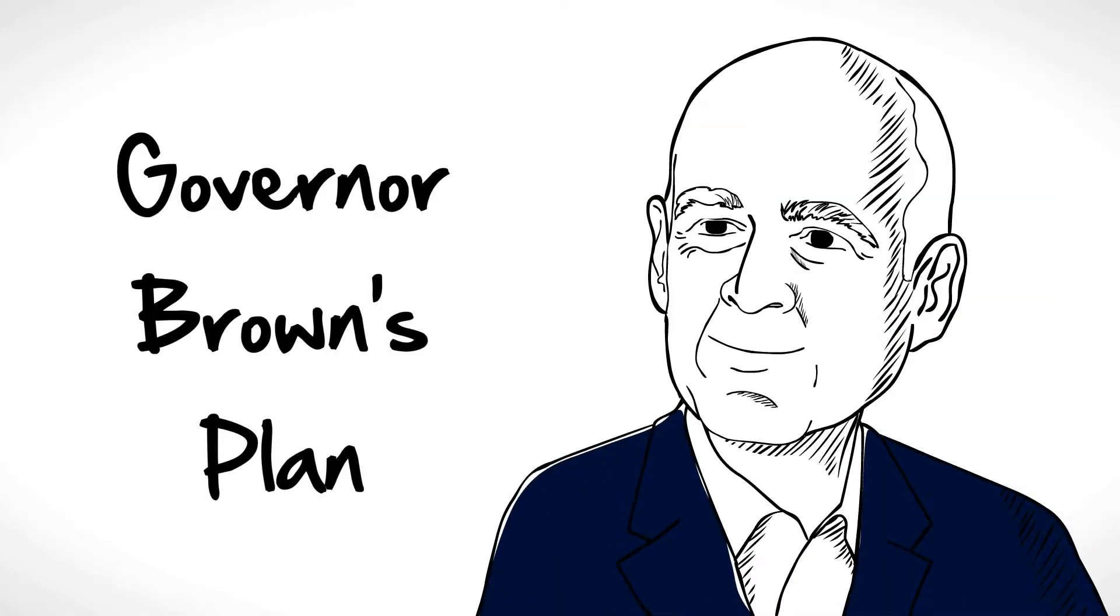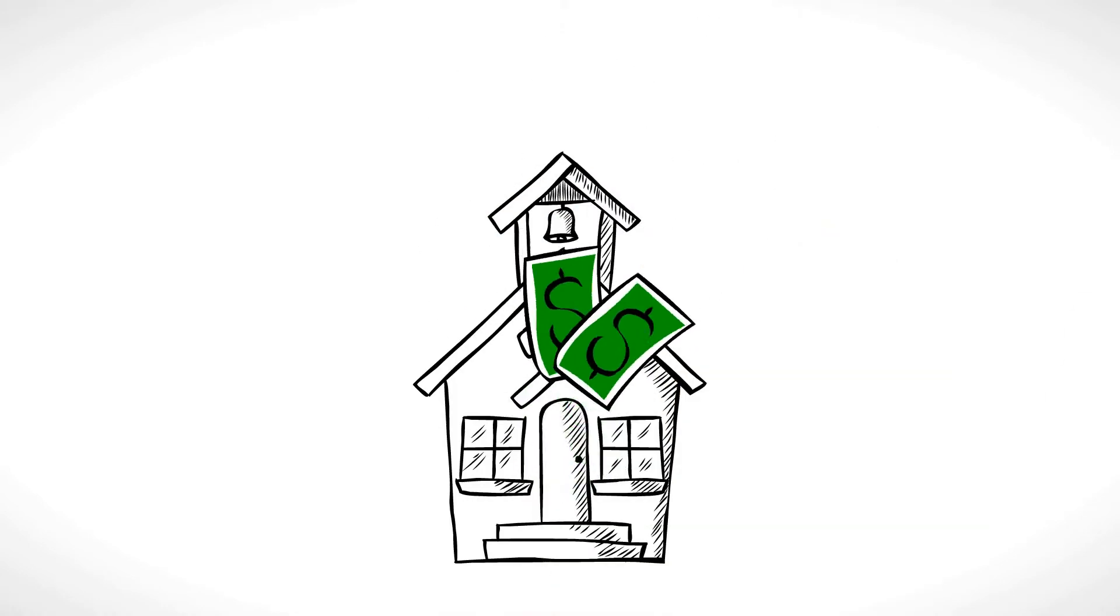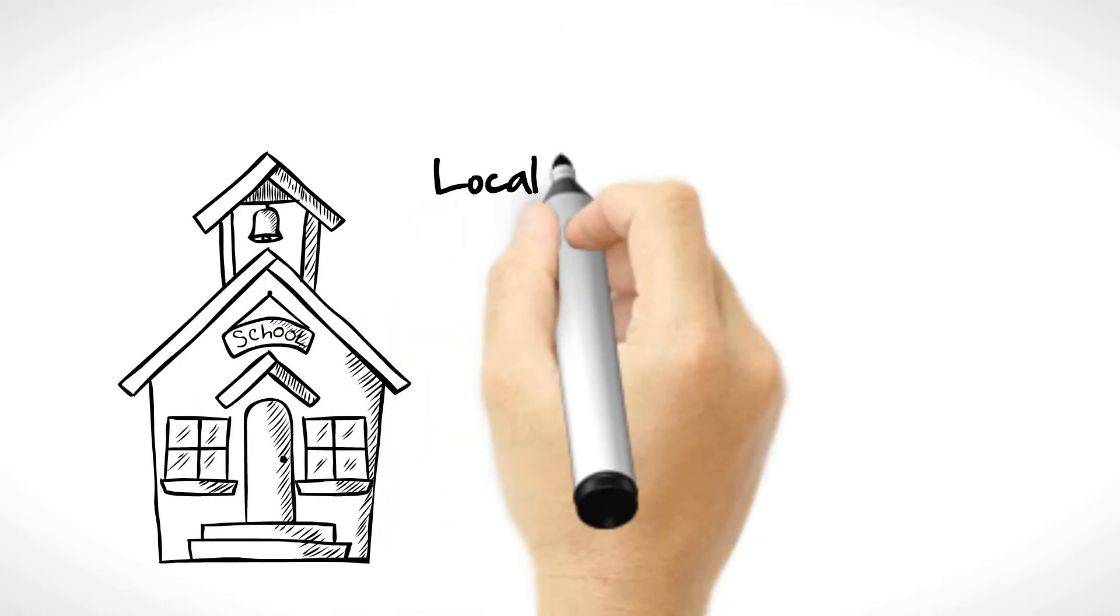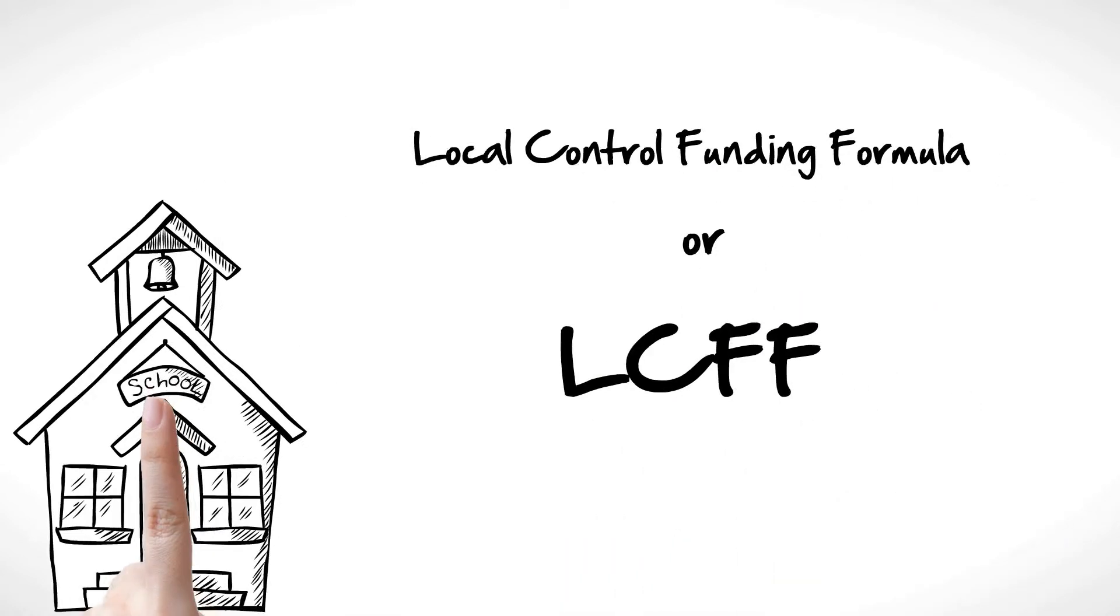The governor has a plan to fix these funding problems. He wants to improve the way we fund schools. The plan is called Local Control Funding Formula, or LCFF. The plan does the following.